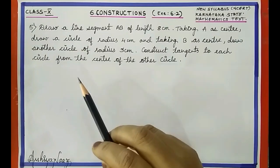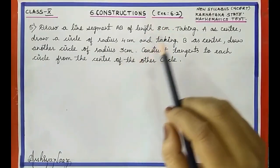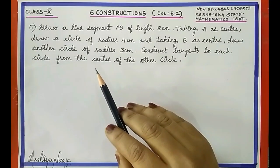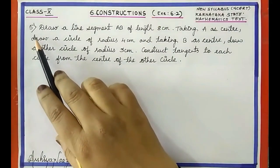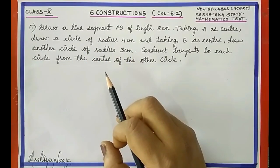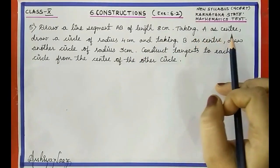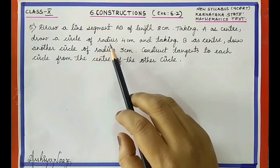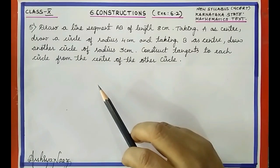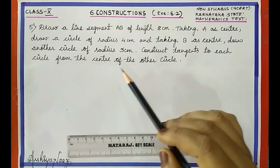Hello dear students, I am Arshiyanaz. In today's video let us continue 6th chapter Constructions, Exercise 6.2 from Karnataka state mathematics textbook. In our previous videos we have solved four problems from this exercise. Now let us move on to the fifth problem. The question says: draw a line segment AB of length 8 centimeter; taking A as center draw a circle of radius 4 centimeter; taking B as center draw another circle of radius 3 centimeter; construct tangents to each circle from the center of the other circle.